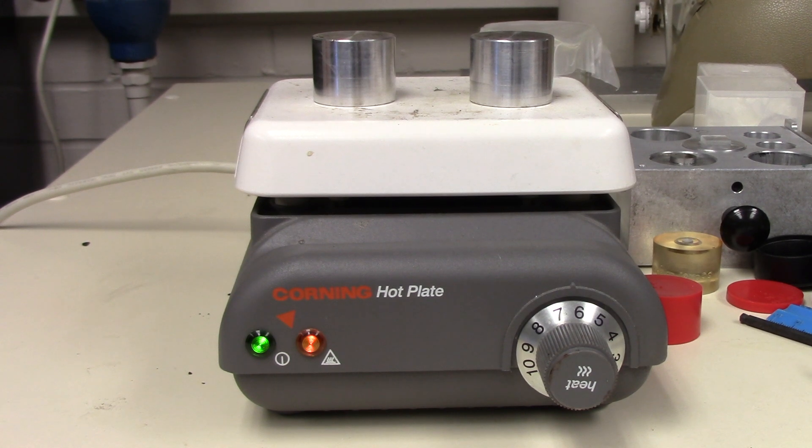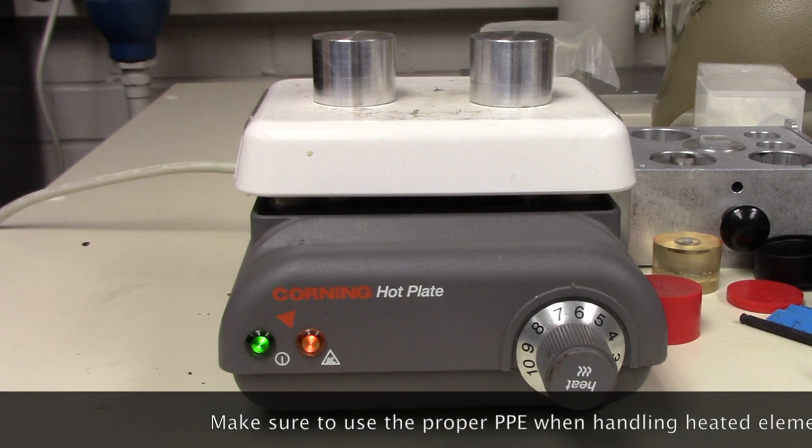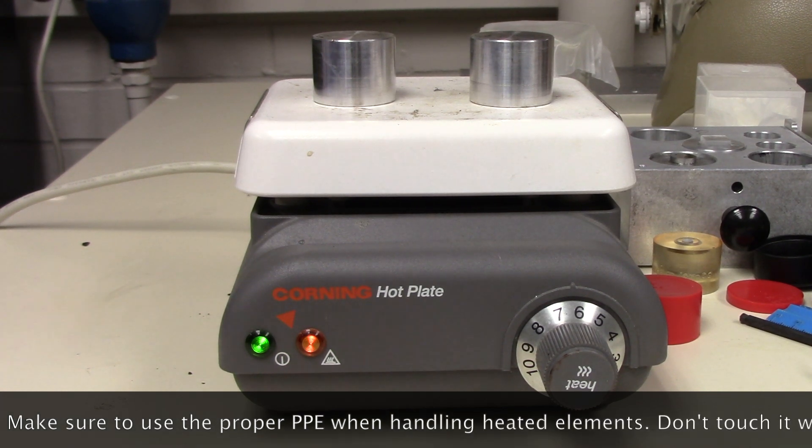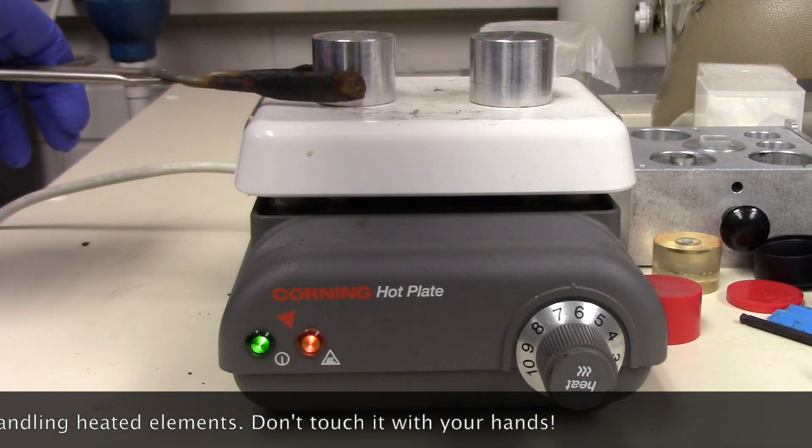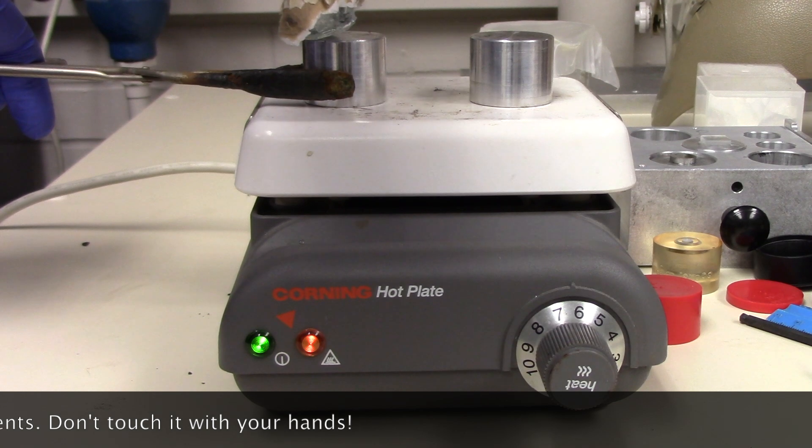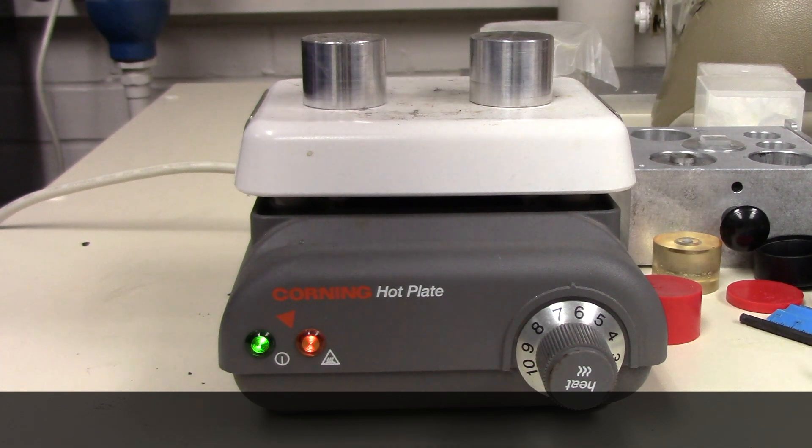To start off, you'll want to heat a sample stub that looks like this to about 70 degrees Celsius. So, on this hot plate here, it's about 6 or 7. And since I've been heating it for a little while, you just want to make sure that once it's heated that you take your crystal bond right here, grab hold of your sample mount, and then just put a small layer of crystal bond onto there.